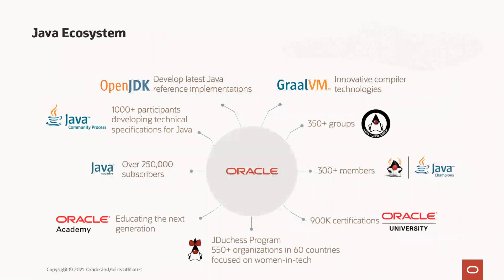I want to start by positioning GraalVM within the Java ecosystem. The big pieces being OpenJDK, where they're building the reference implementation for various versions of Java. In contrast, the GraalVM project is focused on compiler technology. We're not interested in building the Java platform — we are working on basically improving performance of Java. That's the core of the GraalVM mandate.